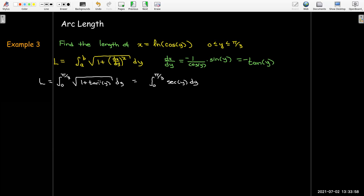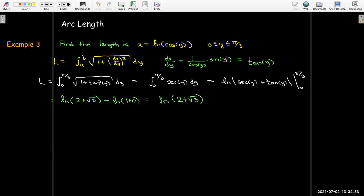So now I don't really need to be concerned about absolute value signs because I'm in the first quadrant and all of my trig functions are positive. So 1 + tan²(y) is sec²(y). Radical of sec²(y) in the first quadrant is just sec(y), and the antiderivative of sec(y) is ln|sec(y) + tan(y)|. Just evaluate that between 0 and π/3.